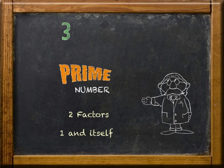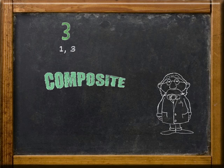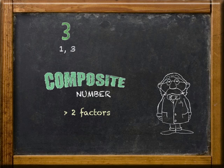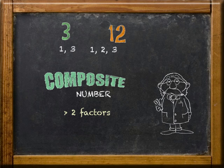An example is the number 3. It has two factors, one and three. A composite number has more than two factors. For example, the number 12 has factors of 1, 2, 3, 4, 6, and 12.